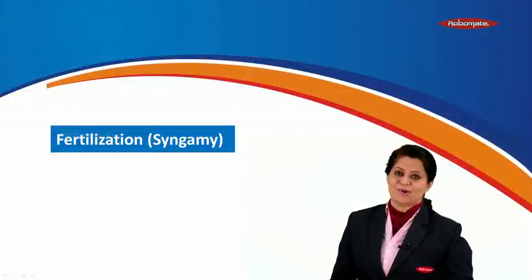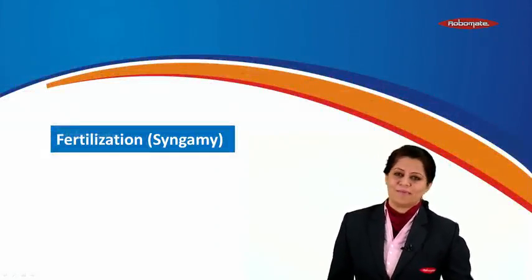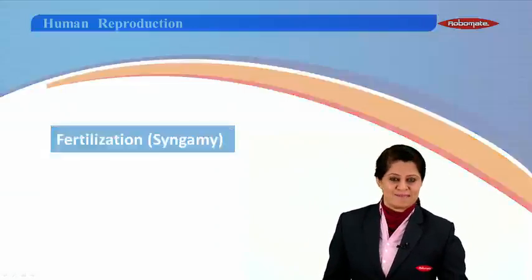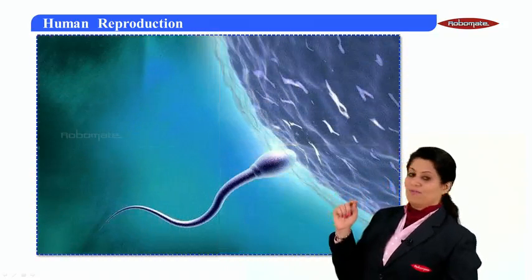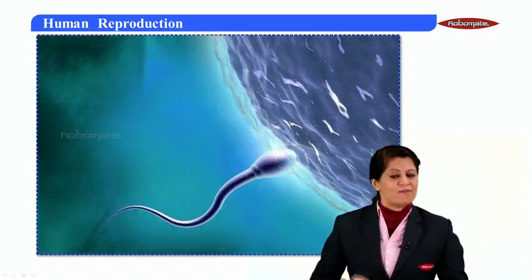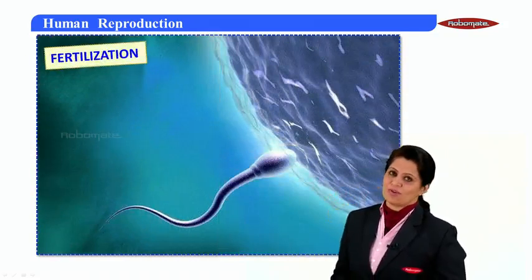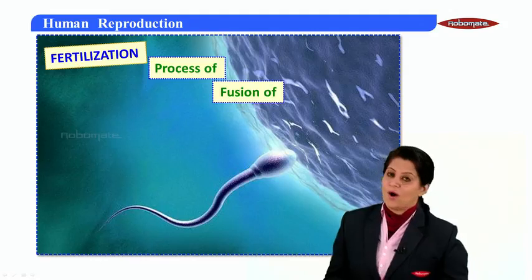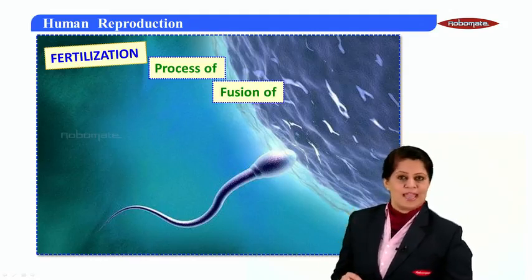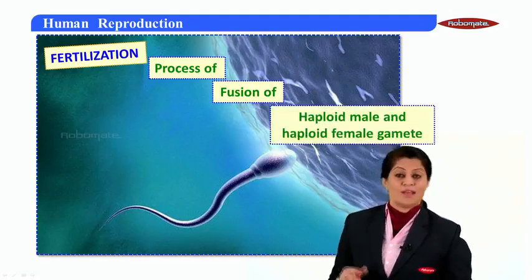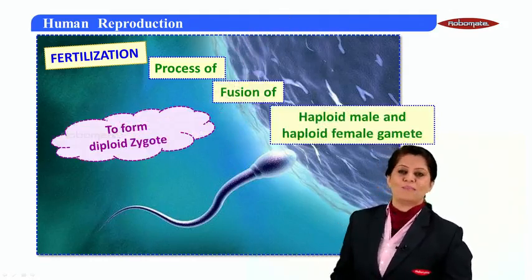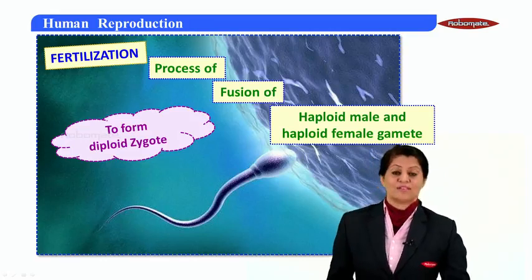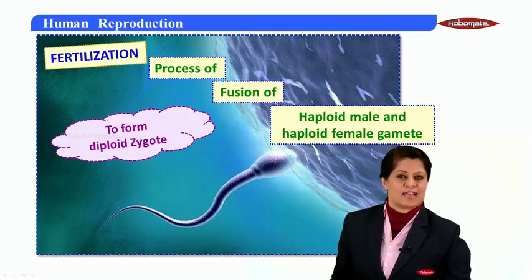Hello students, in this module we are learning an important process called fertilization or syngamy. When we define fertilization, it is the process of fusion of haploid male and female gametes to form a diploid zygote with 2n chromosomes. So this is the definition of fertilization.